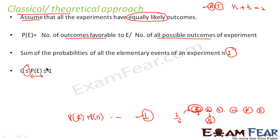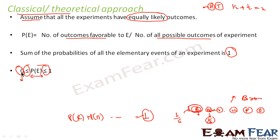Any probability is always greater than or equal to 0 and less than or equal to 1. When probability equals 0, it means the event is impossible - for example, trying to withdraw a brown ball from a bag containing only red, blue, yellow, white, pink, and orange balls gives probability 0 since there is no brown ball. When probability equals 1, it is a sure or certain event. Probability always lies between 0 and 1 inclusive.